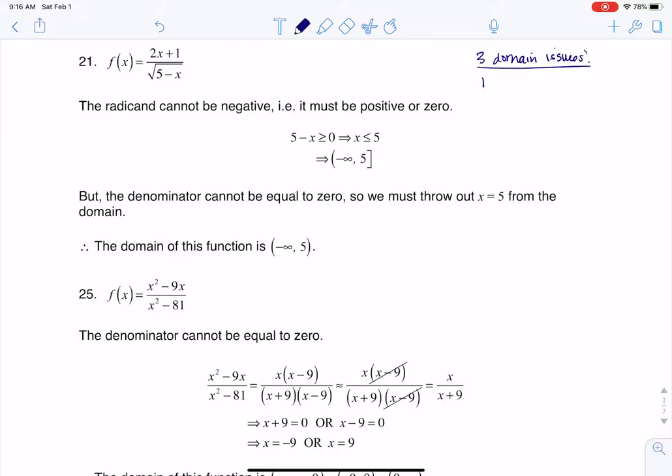We have to worry about fractions where the denominator is zero, we have to worry about radicals where you have an even index and a negative radicand, and then we have to worry about logarithms where the argument is either zero or one.